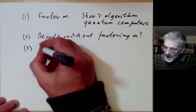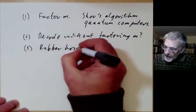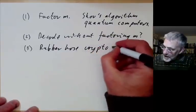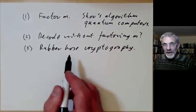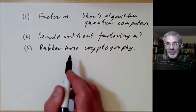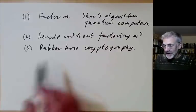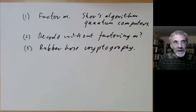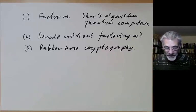There's a well-known method called rubber hose cryptography. This works by capturing someone who knows the secret code, putting them in a basement, and hitting them with a rubber hose until they tell you the secret. This has in the past been a quite effective method of breaking codes, which is sometimes overlooked.